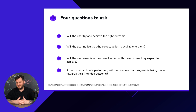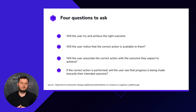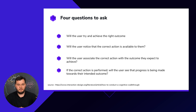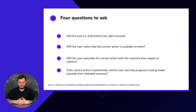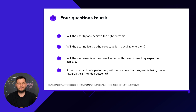The second question is: will the user notice that the correct action is available to them? This is about findability. A lot of people think that if we put something in a certain place it will work for sure, but it turns out people expect it to be somewhere else. This is where we can identify problems with objects or actions not being findable or available to the user.